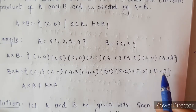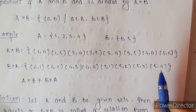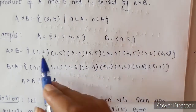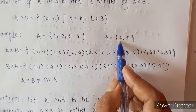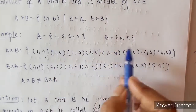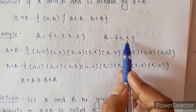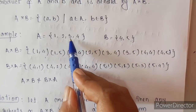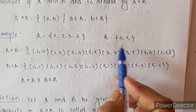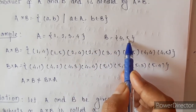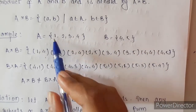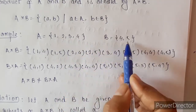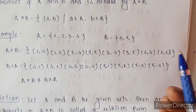What is the Cartesian product of B and A, that is B cross A? We have to take set B first and then set A. So it will be: (4,1), (4,2), (4,3), (4,4), then (5,1), (5,2), (5,3), and (5,4).